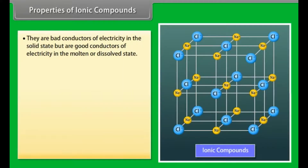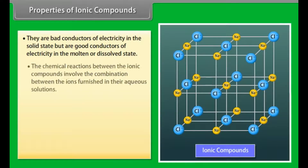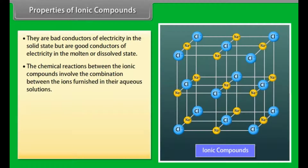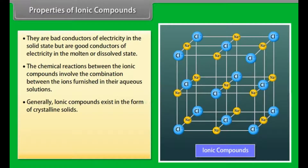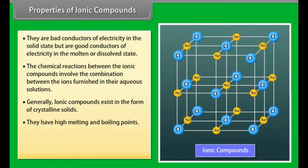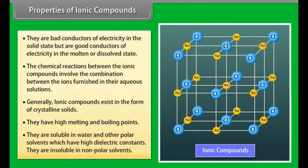Properties of ionic compounds. They are bad conductors of electricity in solid state but are good conductors in molten or dissolved state. Chemical reactions between ionic compounds involve combination between ions furnished in aqueous solutions — such reactions are called ionic reactions. Generally, ionic compounds exist in the form of crystalline solids. They have high melting and boiling points due to very strong electrostatic force of attraction between oppositely charged ions. They are soluble in water and other polar solvents with high dielectric constants, and insoluble in non-polar solvents.